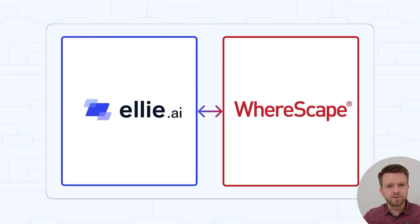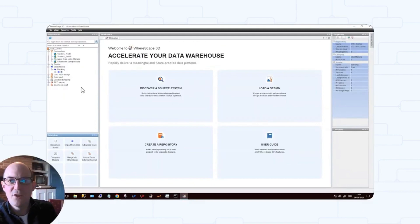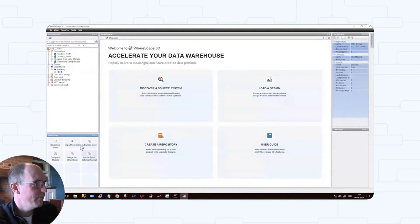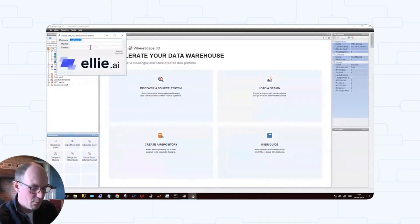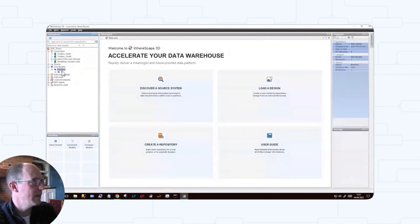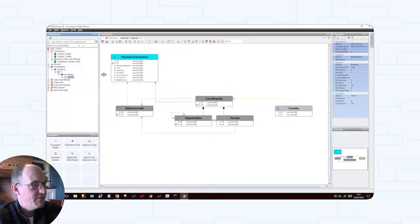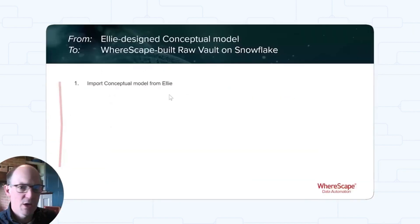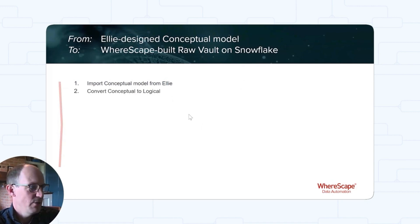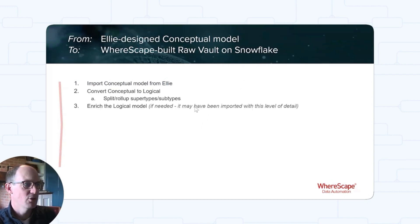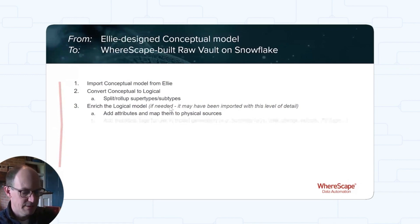Warescape will now be pulling the model out of ELI and showing the result. Let's have a look in Warescape 3D and pull that model across. We'll hit the new import from ELI button and put in the model number — in this case 12117. If we display that model, you'll see we've brought it in with the various different entities and their entity types. We've imported our conceptual model from ELI into 3D. We now convert that conceptual model into a logical model and then enrich that logical model, tagging it up so the different tags can be used for generating different concepts in the physical model.